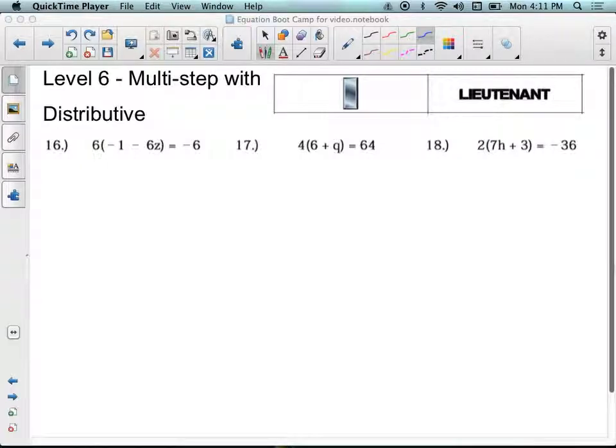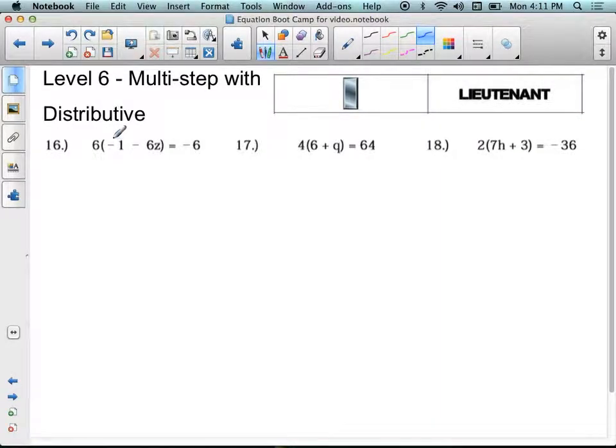So 16 says 6 times the quantity negative 1 minus 6z equals negative 6. The first thing I'm going to do is do my distributive property. 6 times negative 1 is negative 6. 6 times negative 6z is negative 36z, and that equals negative 6.